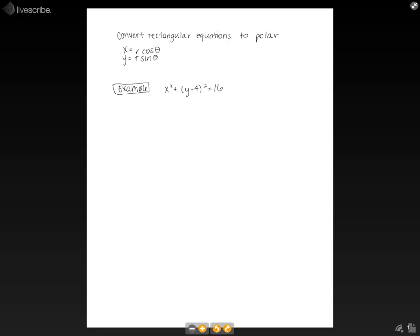In this video, we're going to talk about converting rectangular equations to a polar equation. To do this, you need to realize that x is equal to r cosine theta in polar, and y is equal to r sine theta in polar.